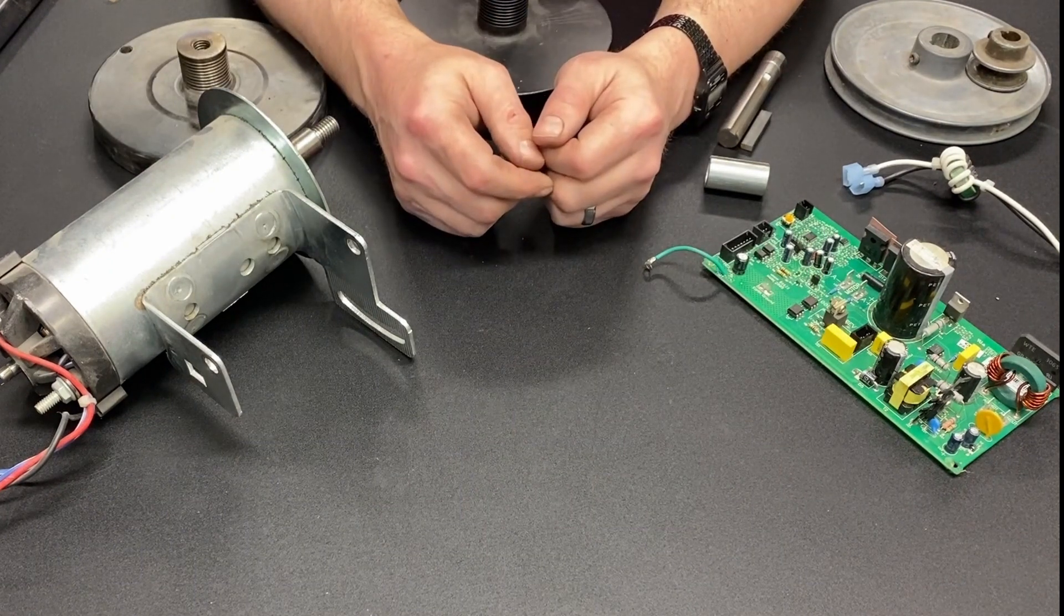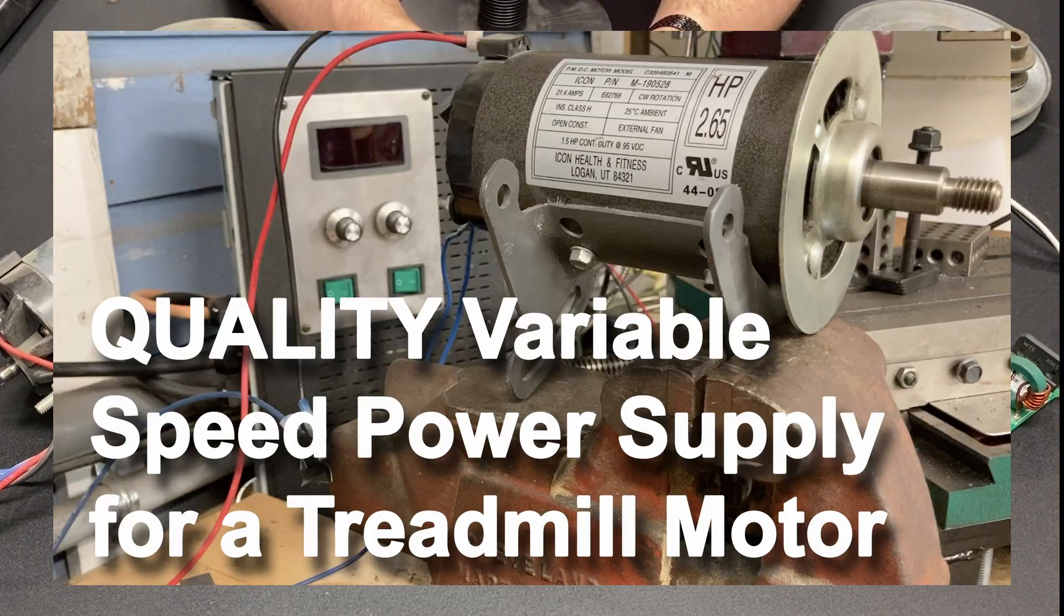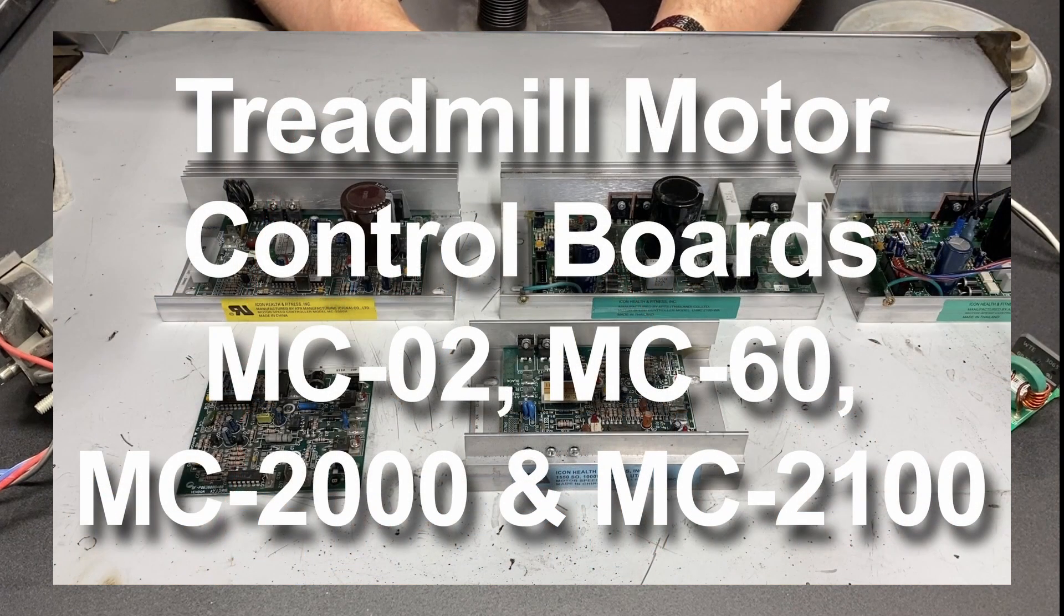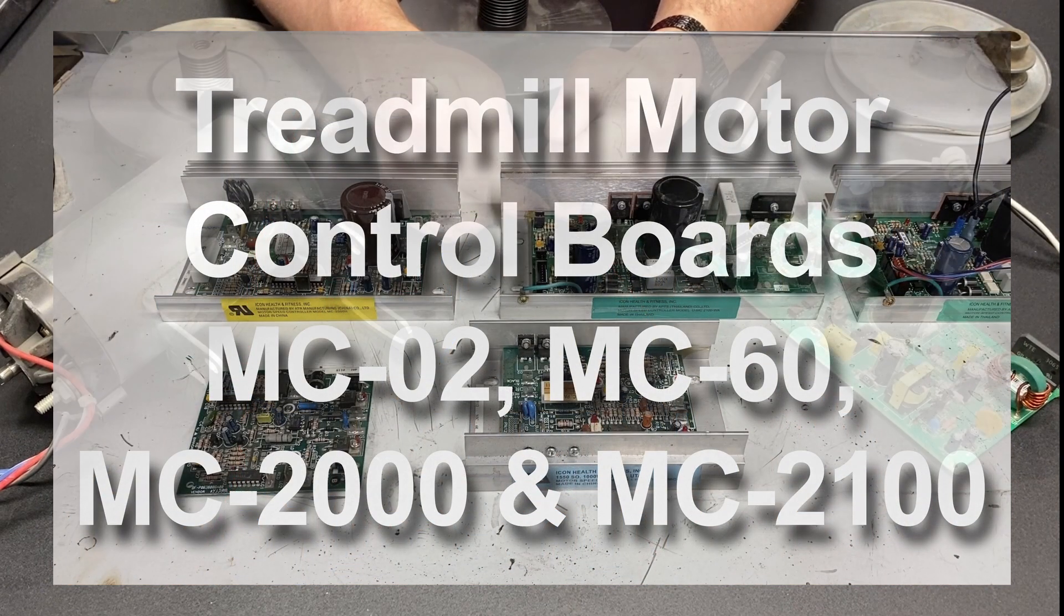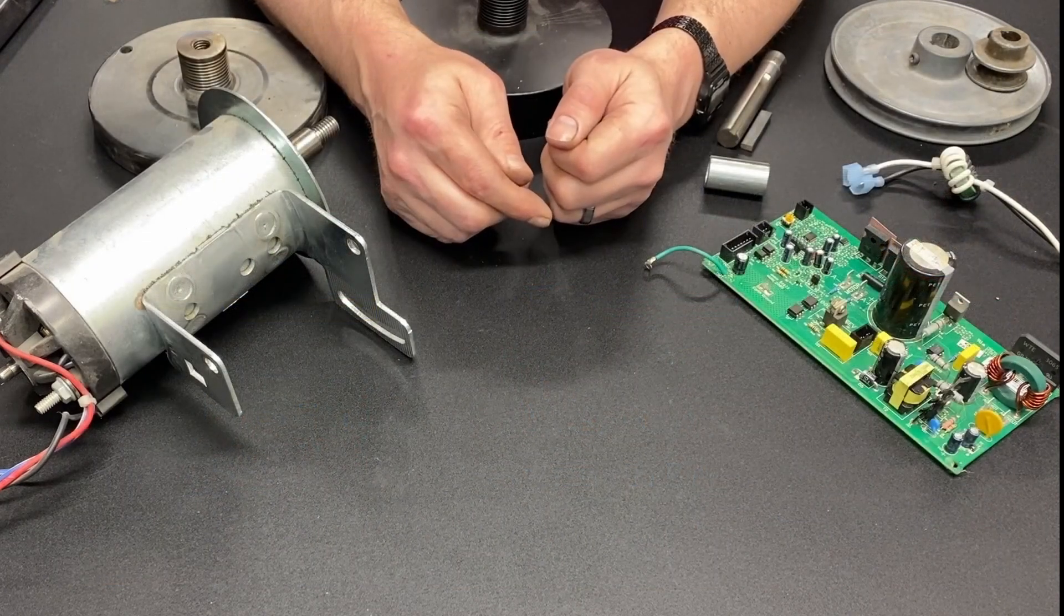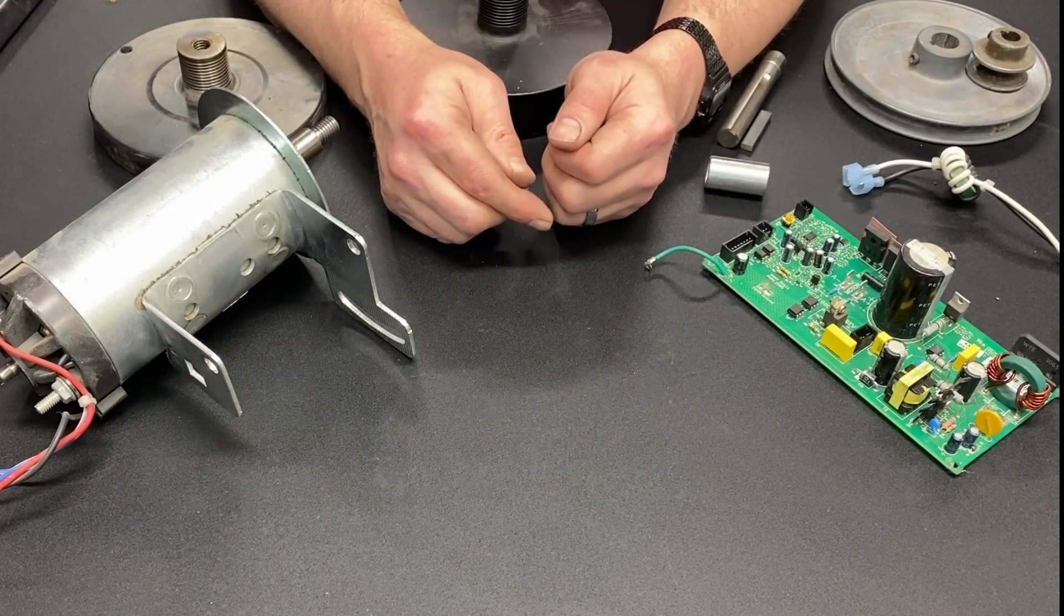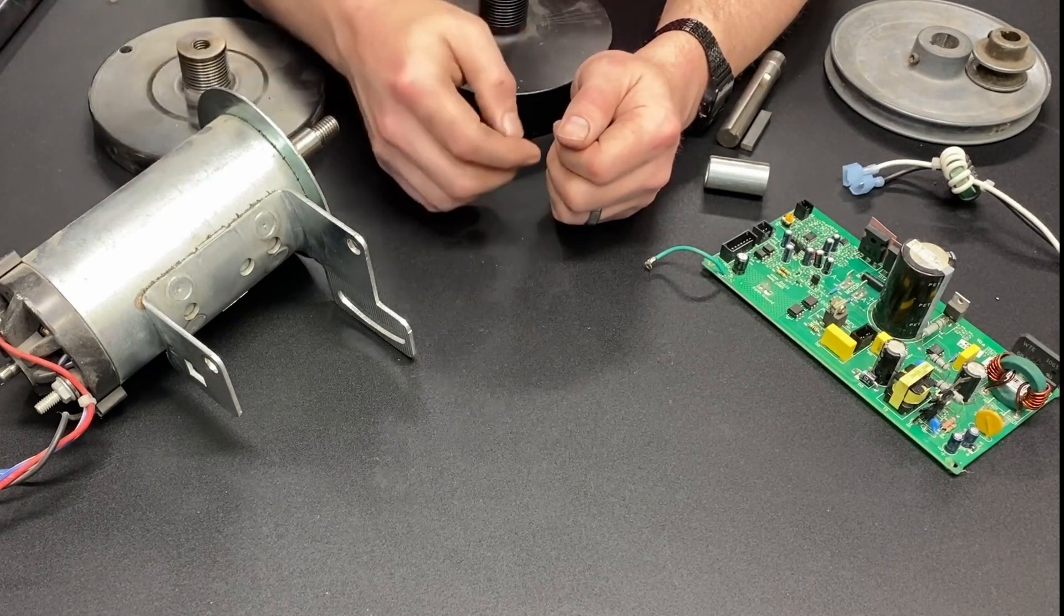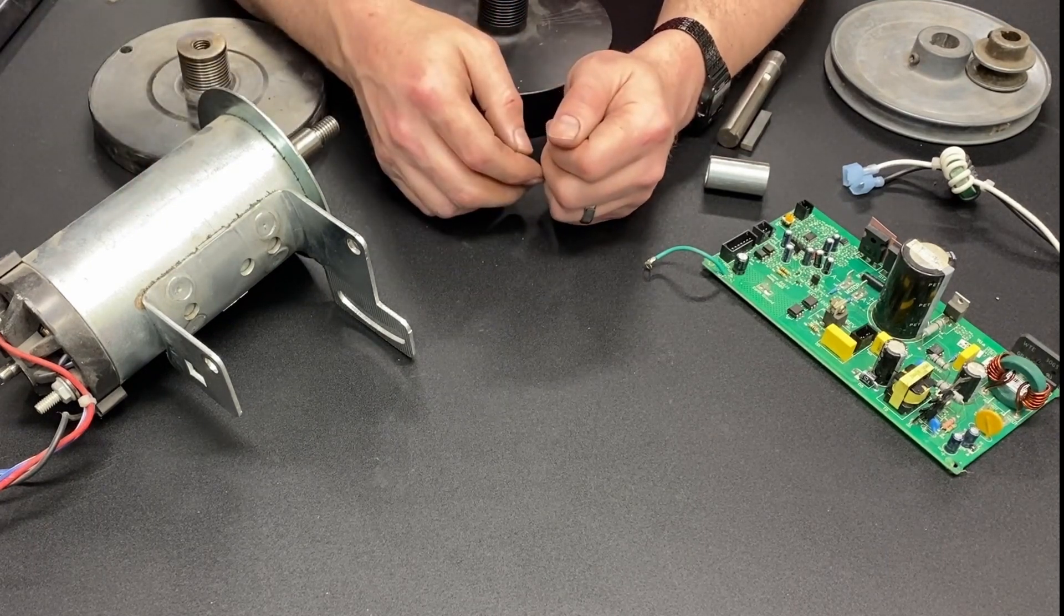In my earlier videos, both my building a quality power supply video and my video on basic treadmill motor controls, I recommend using what's called an RC circuit. That is a capacitor and a resistor that get wired in parallel with the motor to help filter out power spikes.